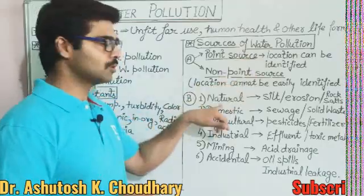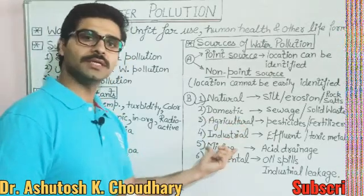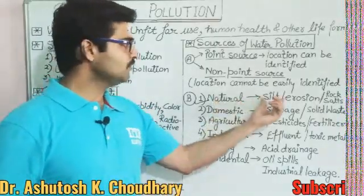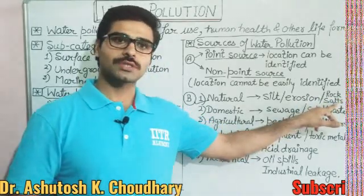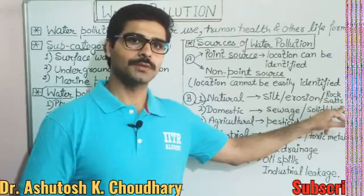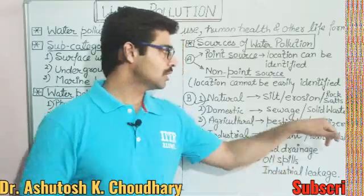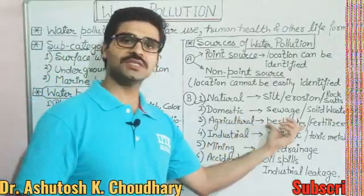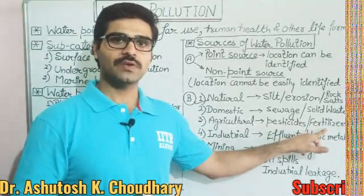As per the next classification, sources of water pollution may be natural, domestic, agricultural, industrial, mining, or accidental. For natural sources, examples include silt erosion, soil erosion, and leaching of rock salts. For domestic sources, examples include sewage and solid waste from municipalities or households. Agricultural sources include pesticides and excessive use of fertilizers, which pollute both underground water tables and surface water bodies.